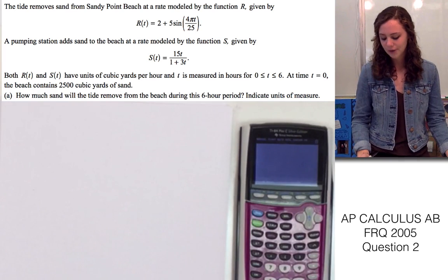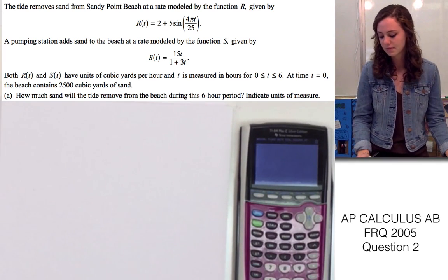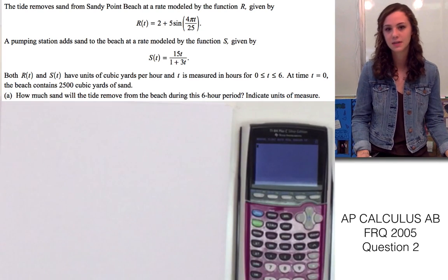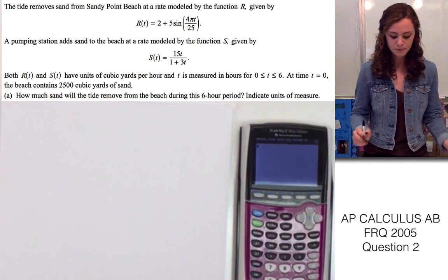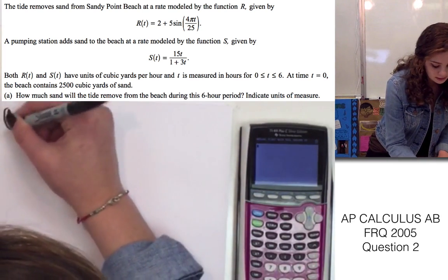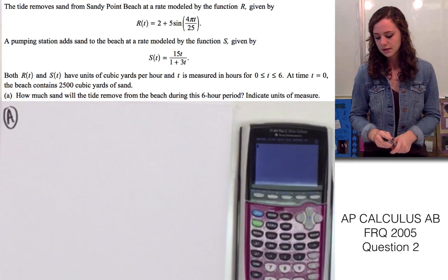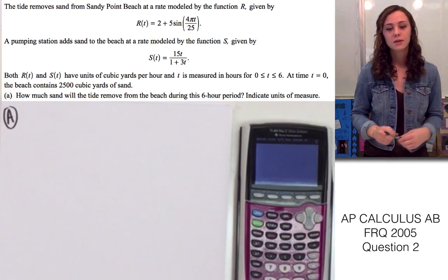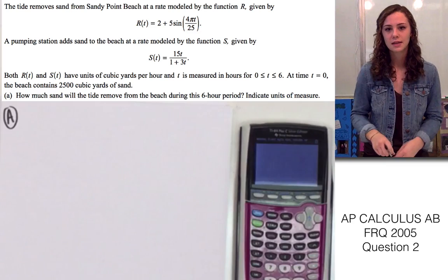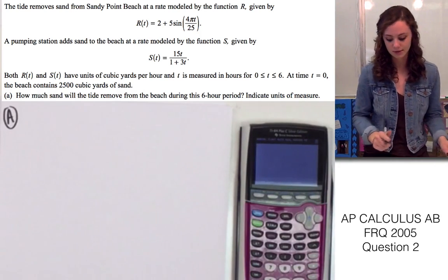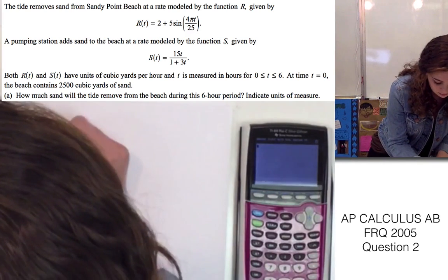Part a is asking how much sand will the tide remove from the beach during this 6 hour period, and we need to indicate the units of measure. Since r is giving the rate at which sand is being pumped onto the beach, we need to take the integral of r to find the actual amount of sand.